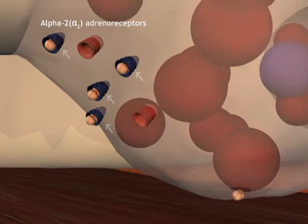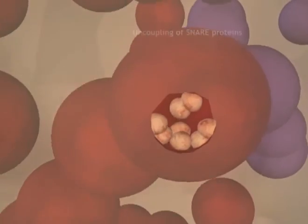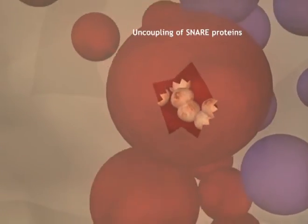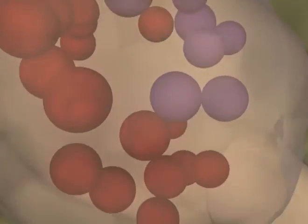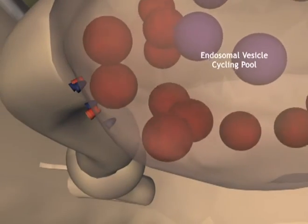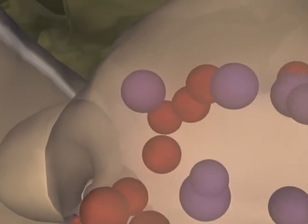When the vesicles are depleted, the SNAREs are released and the vesicle rejoins the cycling pool. In some cases, the vesicle enters the endosomal pool and will be degraded. In other cases, the vesicle will remain intact and will be refilled with neurotransmitters.